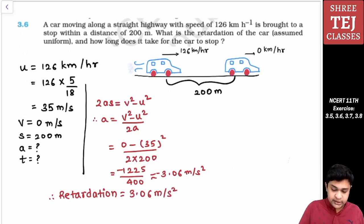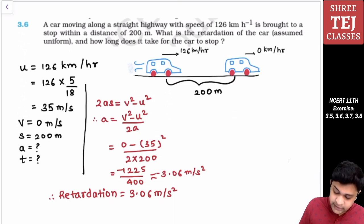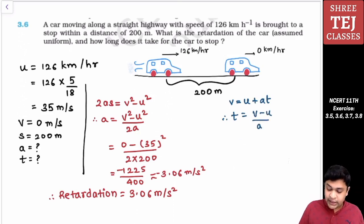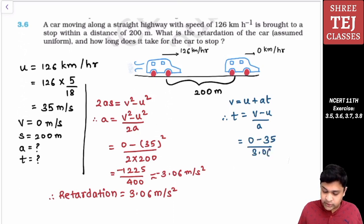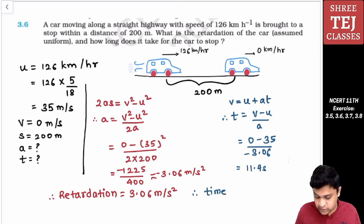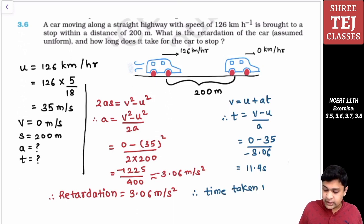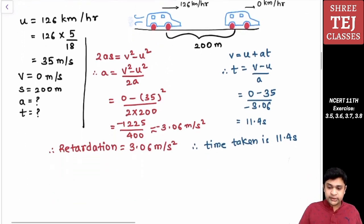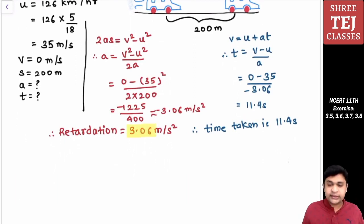Now for the time, we use the first equation of motion: V = U + at. Therefore t = (V − U) / a = (0 − 35) / (−3.06) = 11.4 seconds. Therefore, the time taken is 11.4 seconds. So the retardation is 3.06 meter per second square and the time taken is 11.4 seconds.